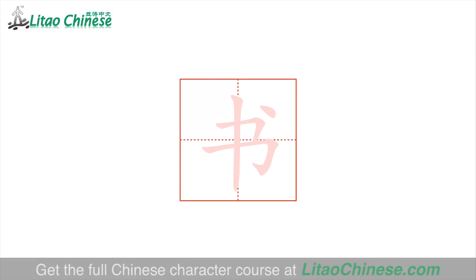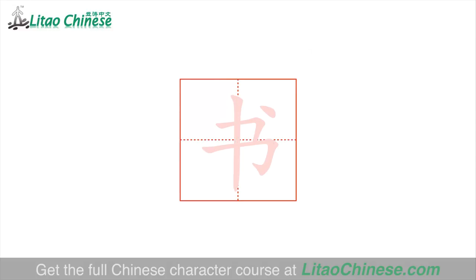Here is the correct stroke order of 书. The first stroke is 横折, then write 横折勾. The third one is 竖, and the dot 点 should be on the right of the top. Four strokes in total. One more time: 横折, 横折勾, 竖, 点. 书, book.